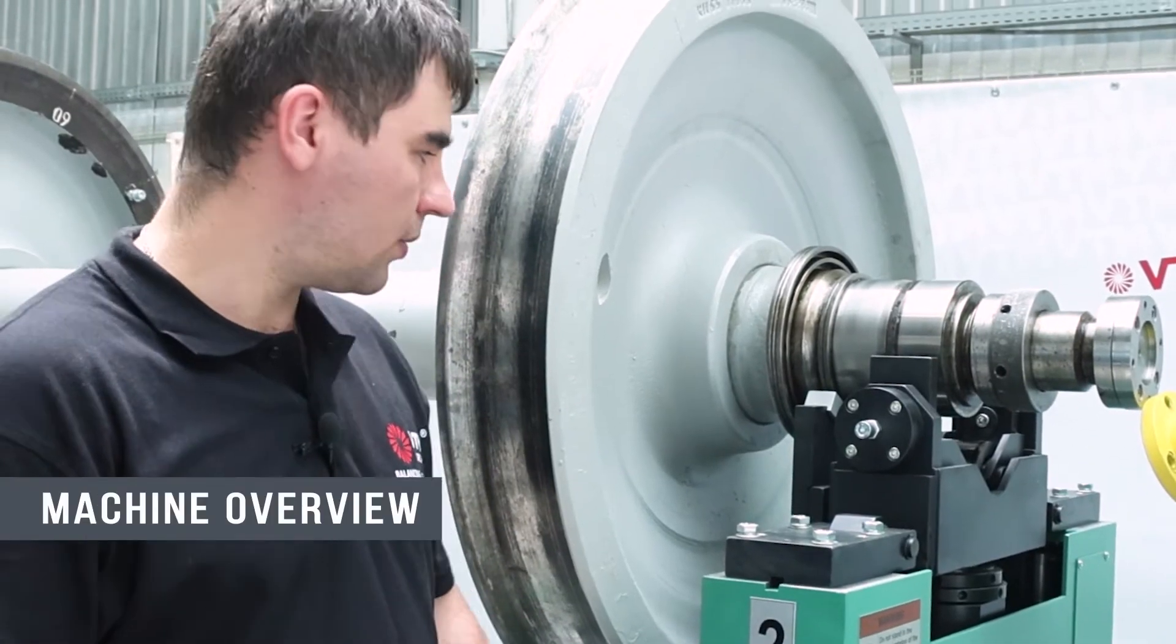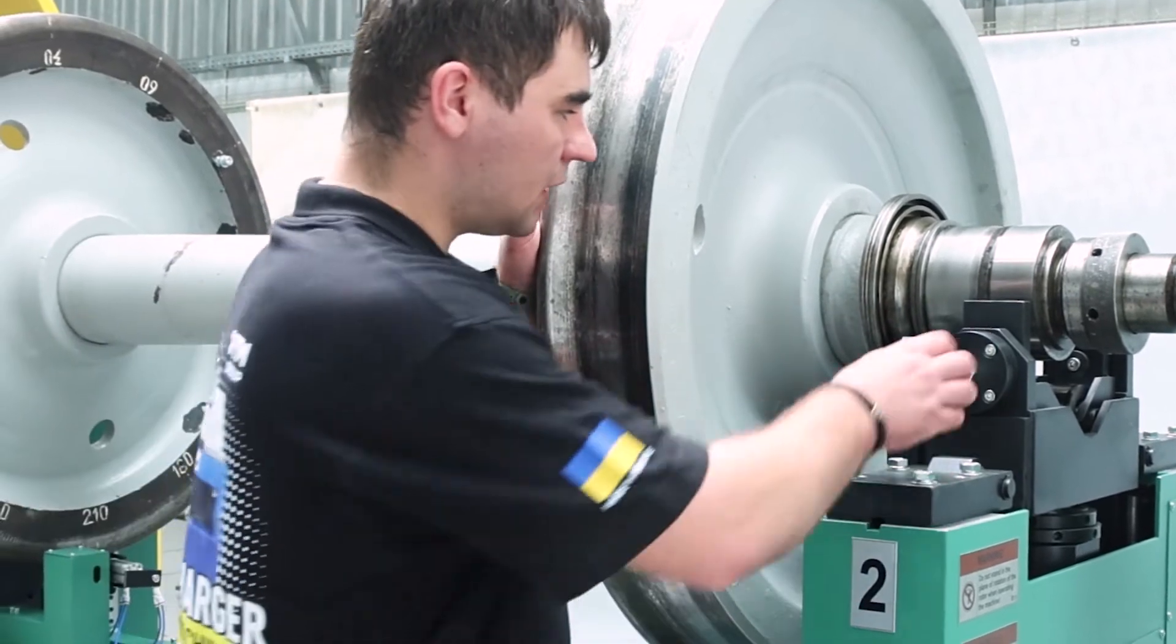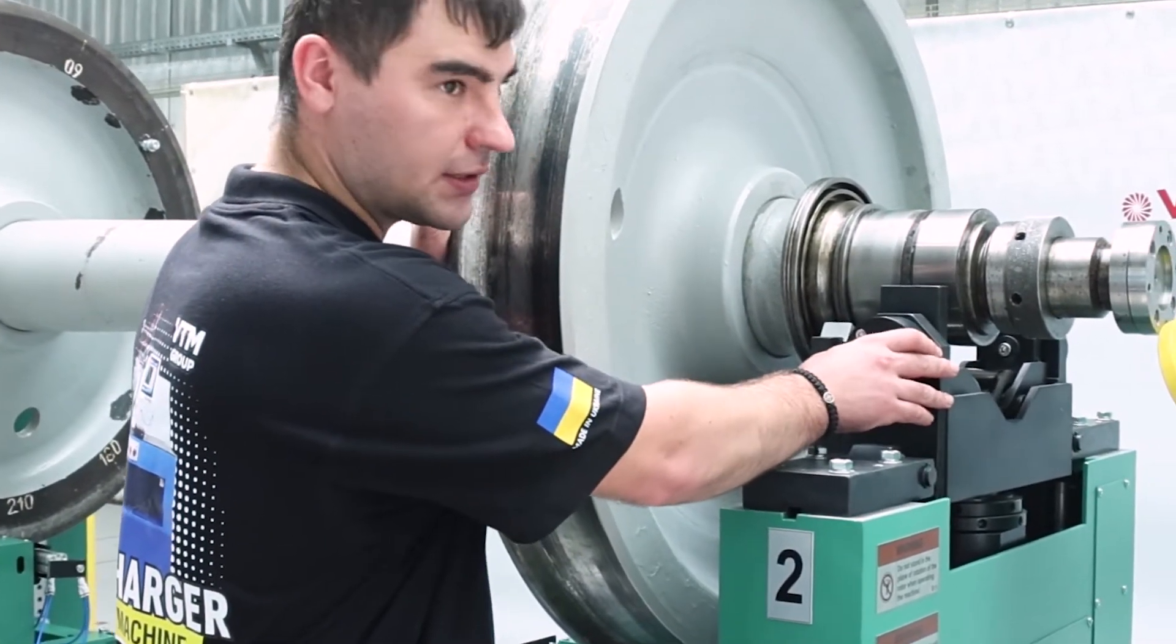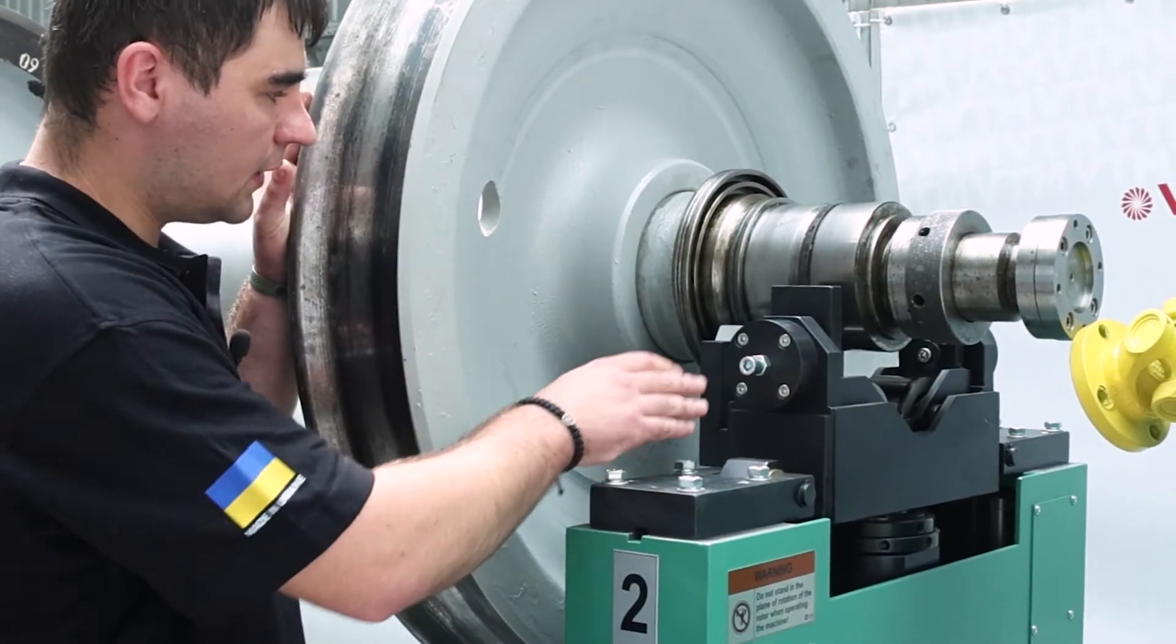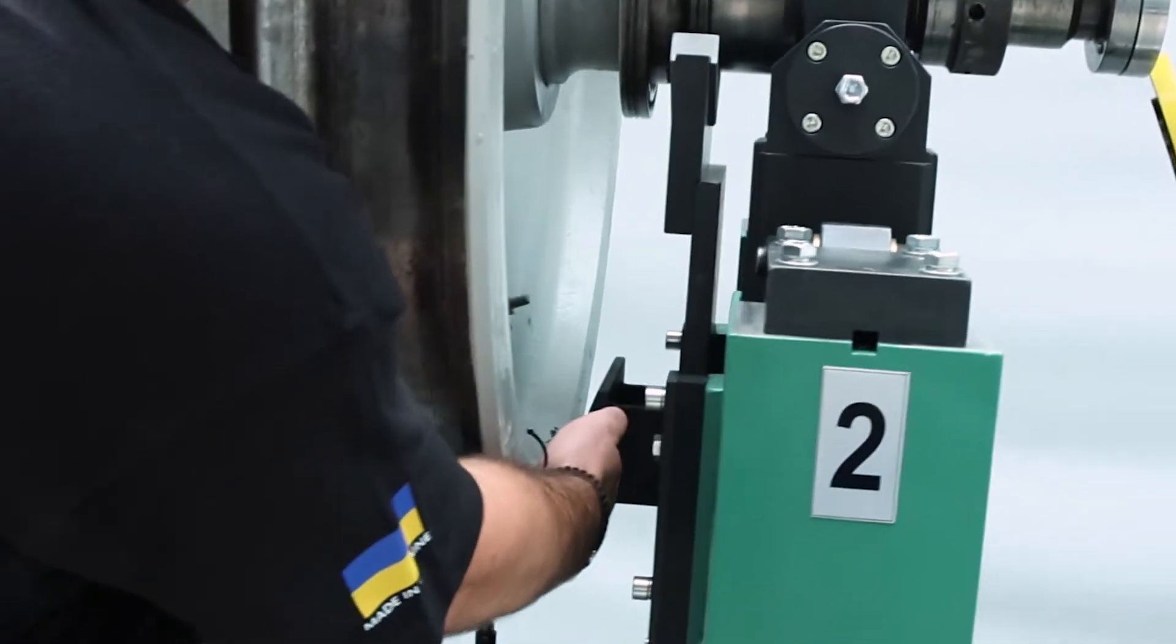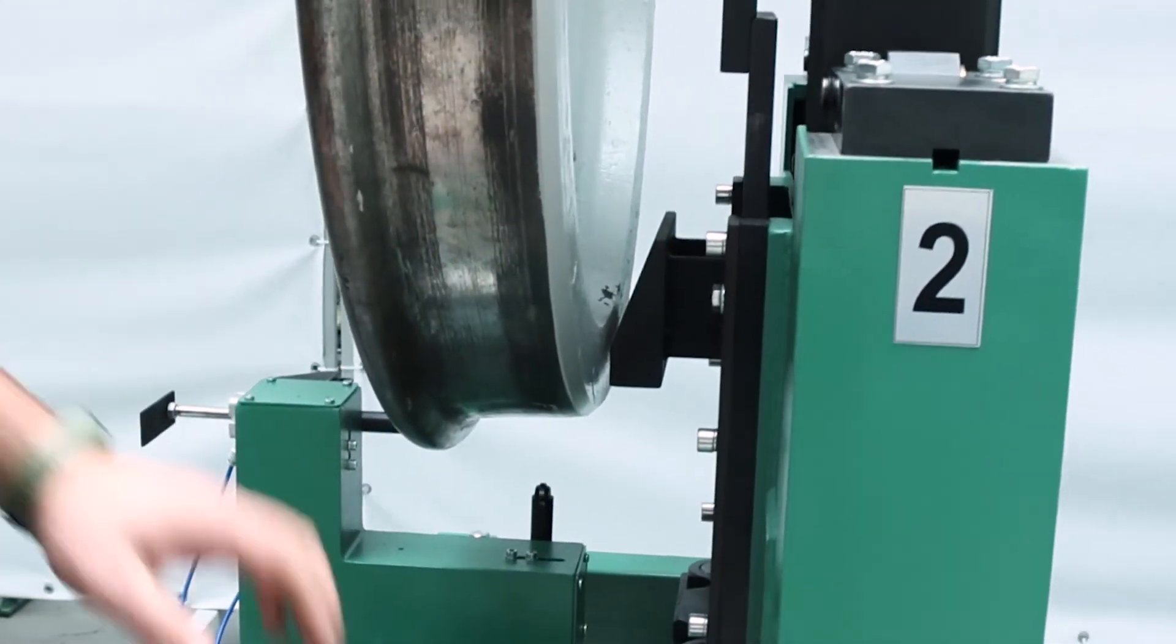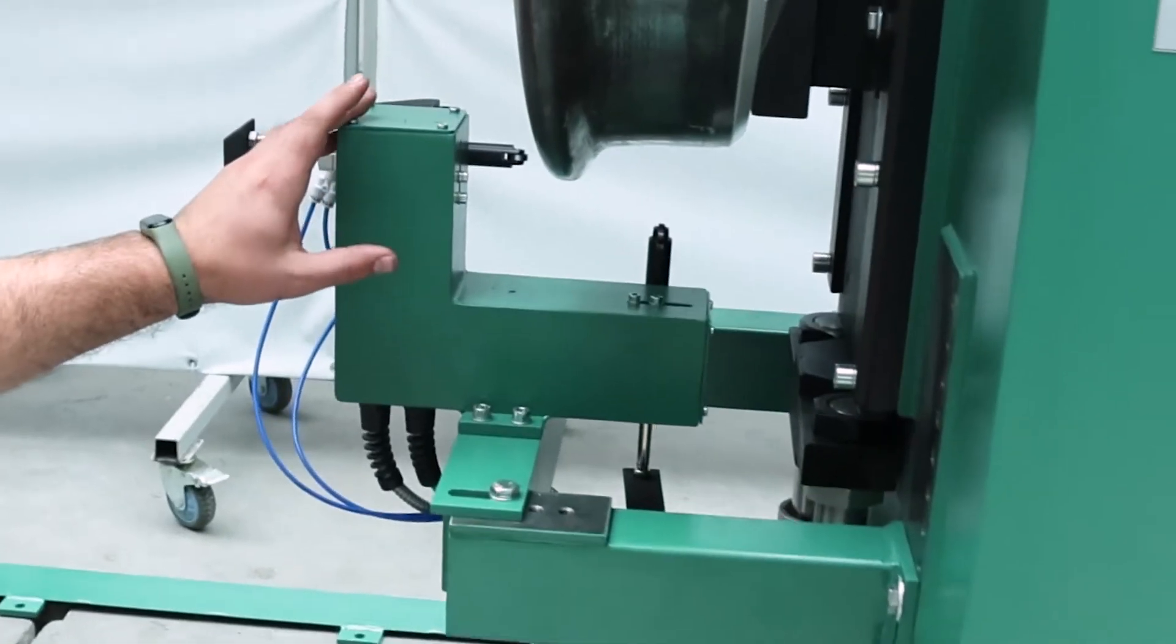The machine is equipped with two supports for measuring imbalance and run-out. On top of the support there is a cassette with rollers, as well as a suspension. The next element is the jack cover, the wheelset catcher. A bracket for axial and radial run-out sensors is installed here.